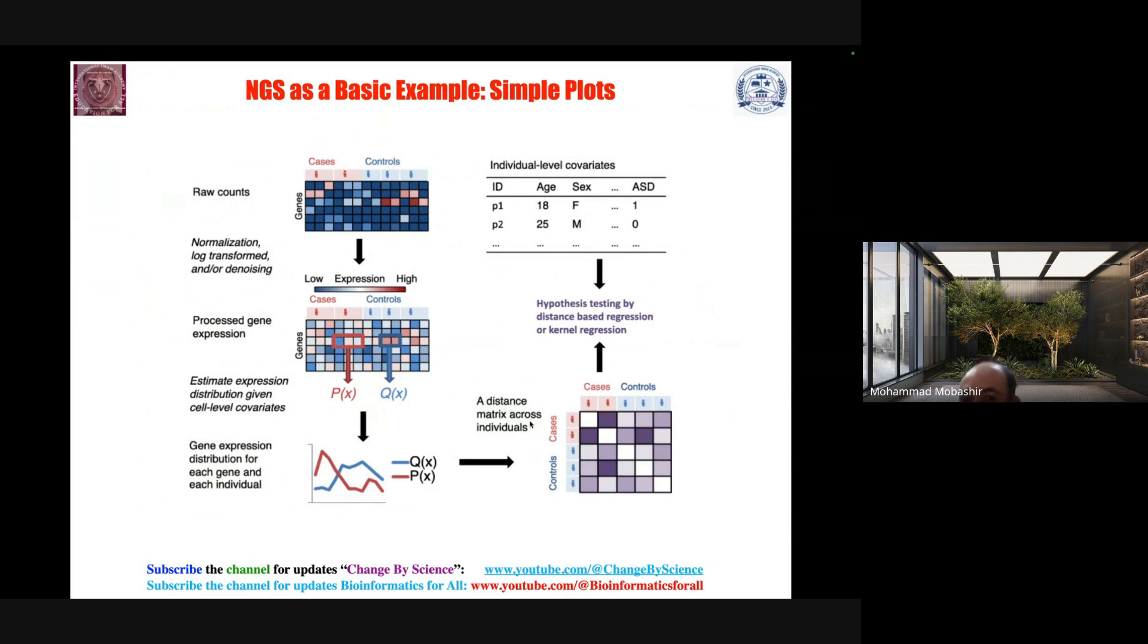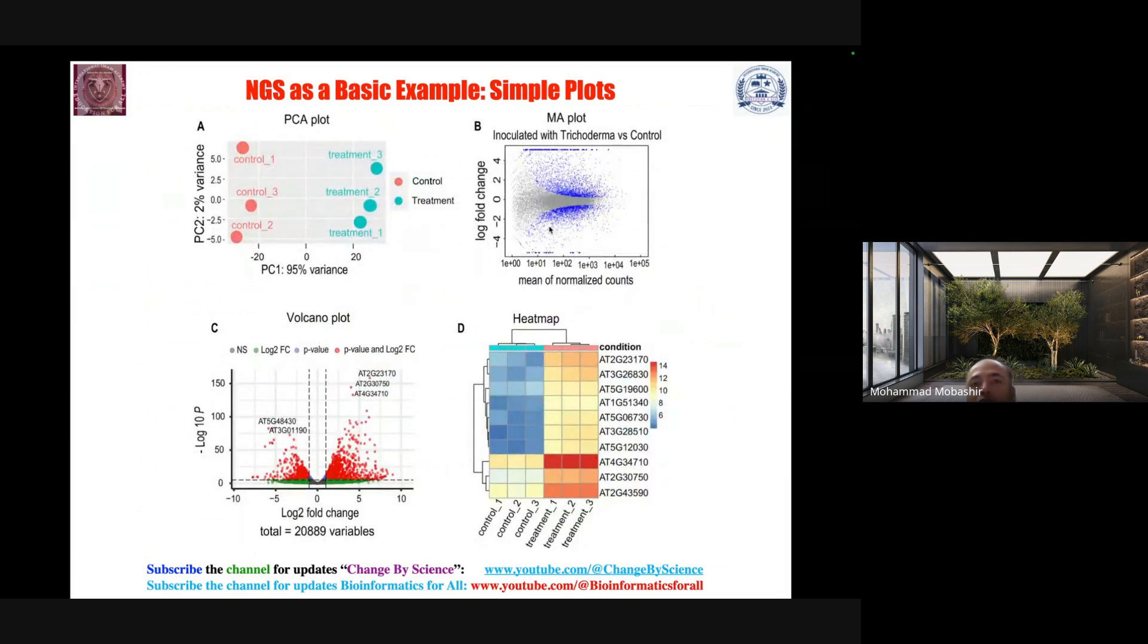You can think about gene expression distribution for each gene and individual, then the distance matrix across individuals. You can go for hypothesis testing by distance measured regression or kernel regression based on individual personal information such as age, ID, male or female, and some more conditions.